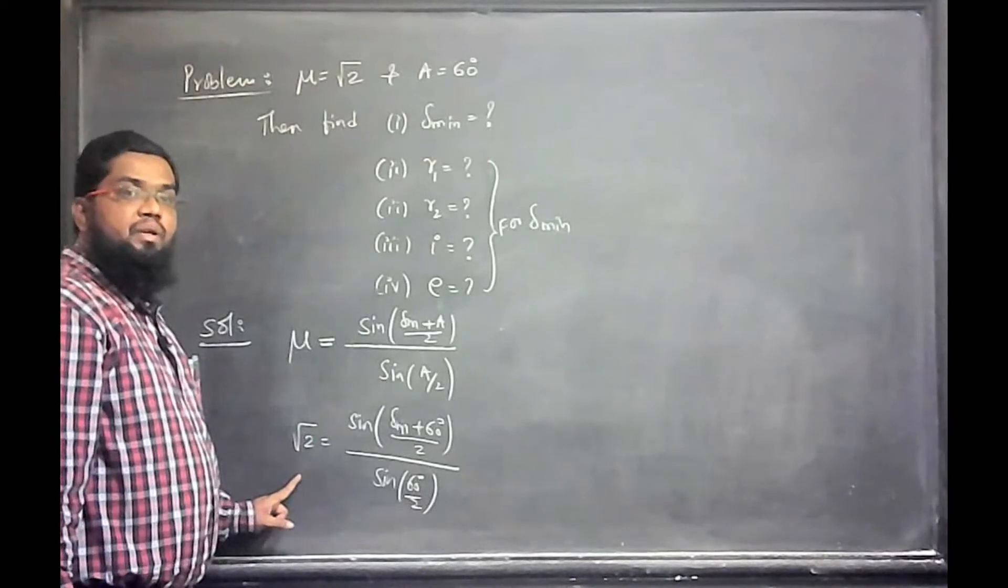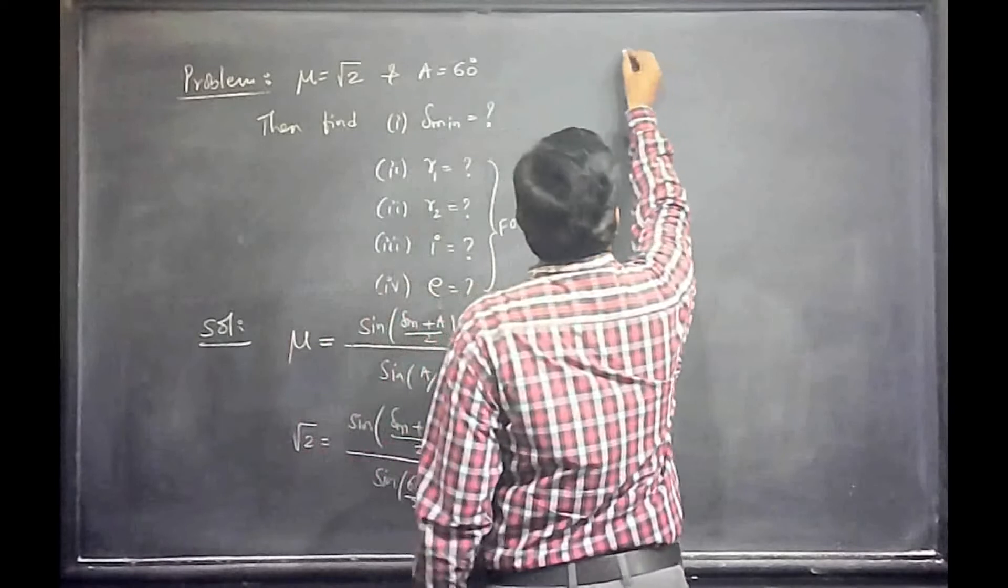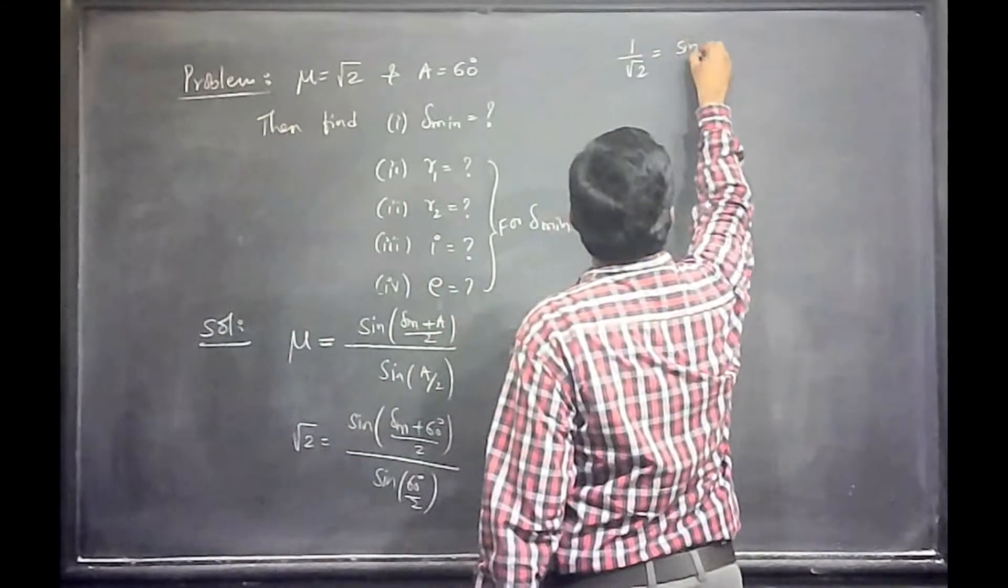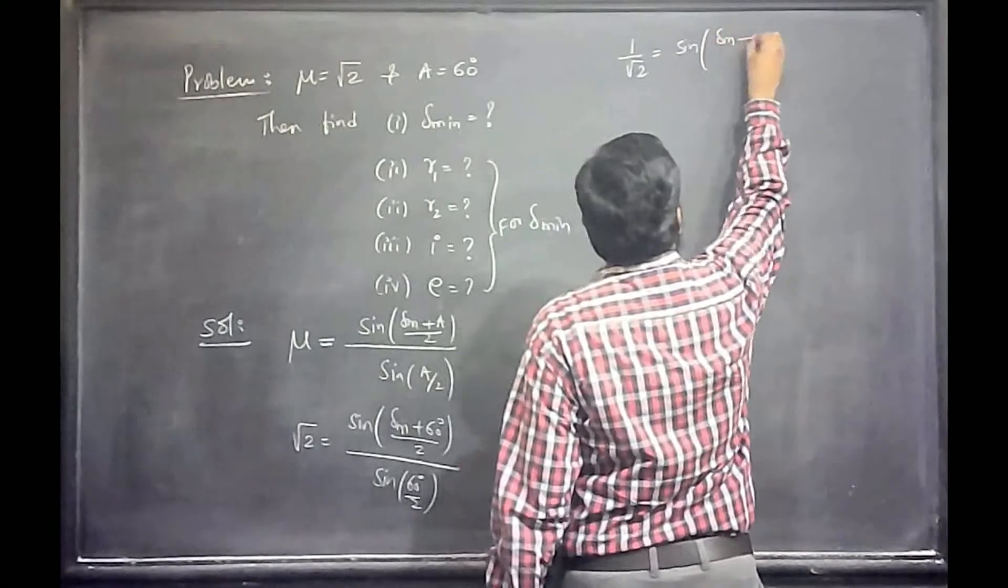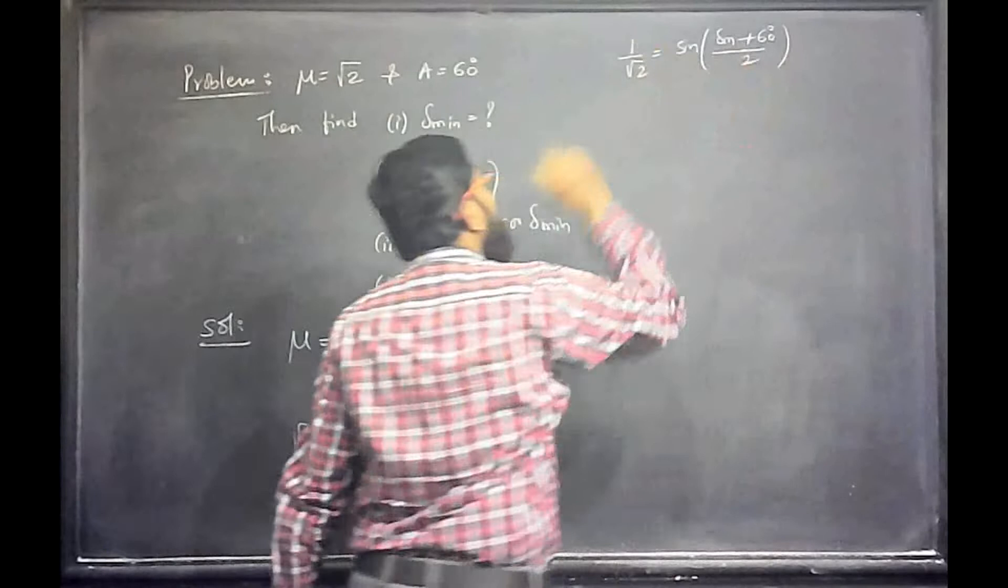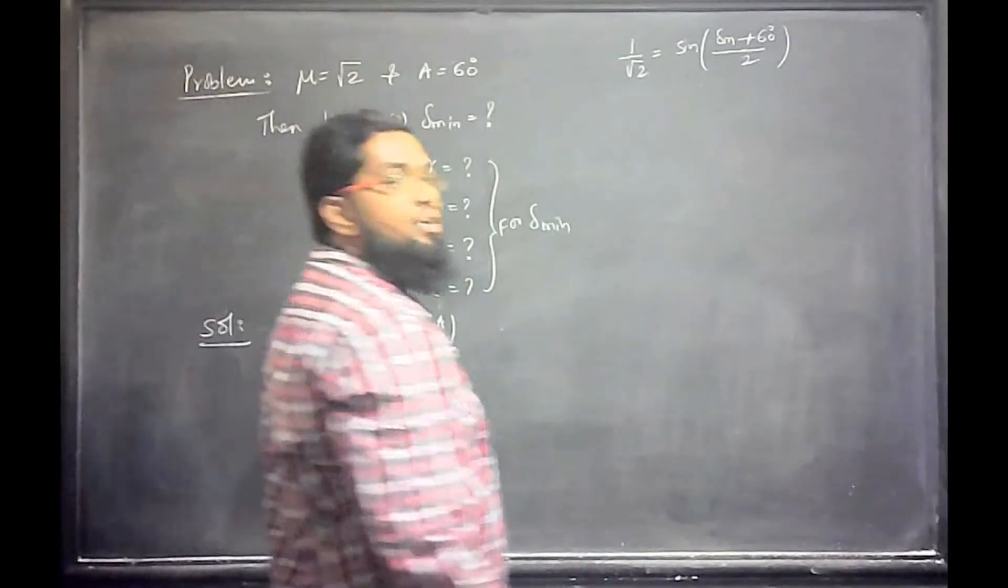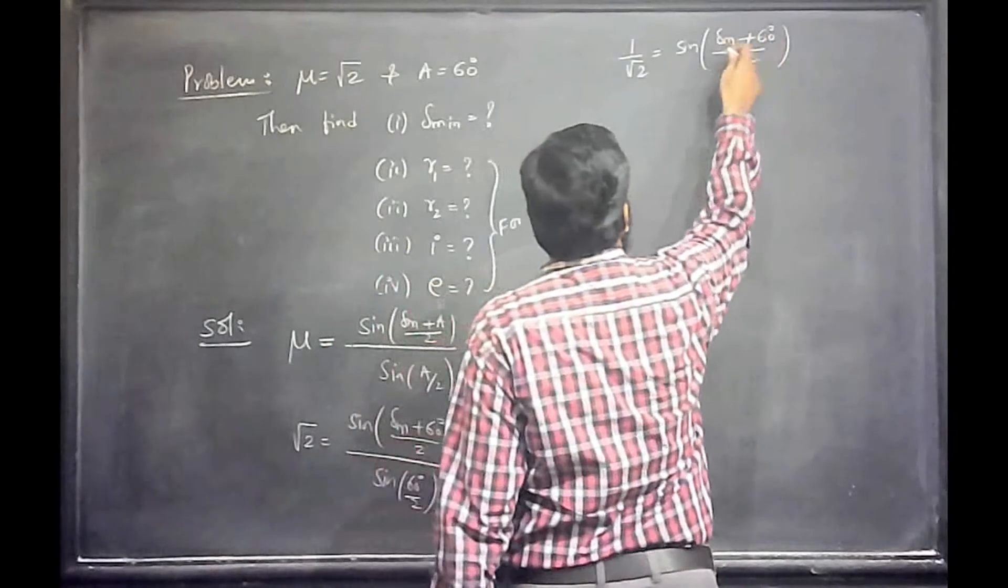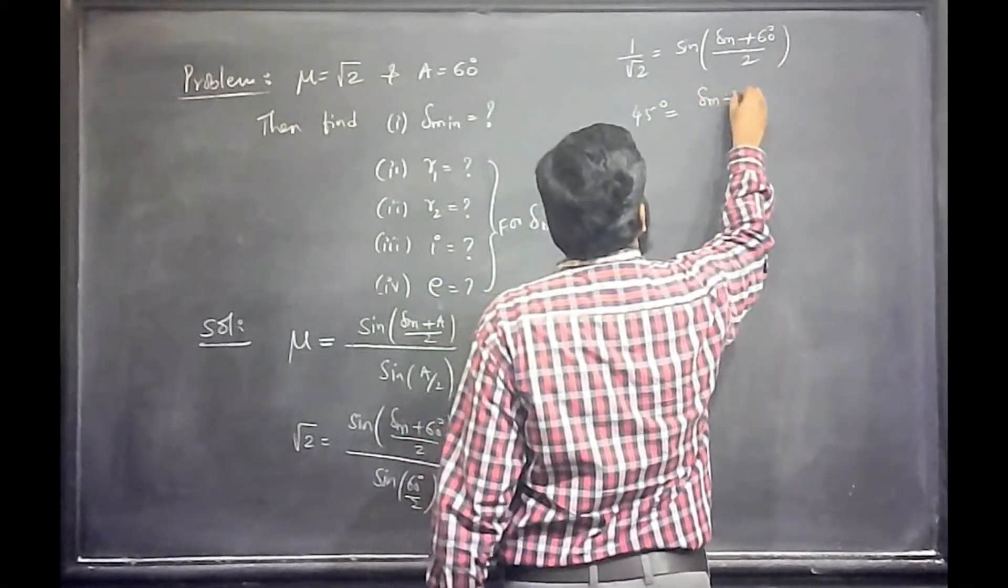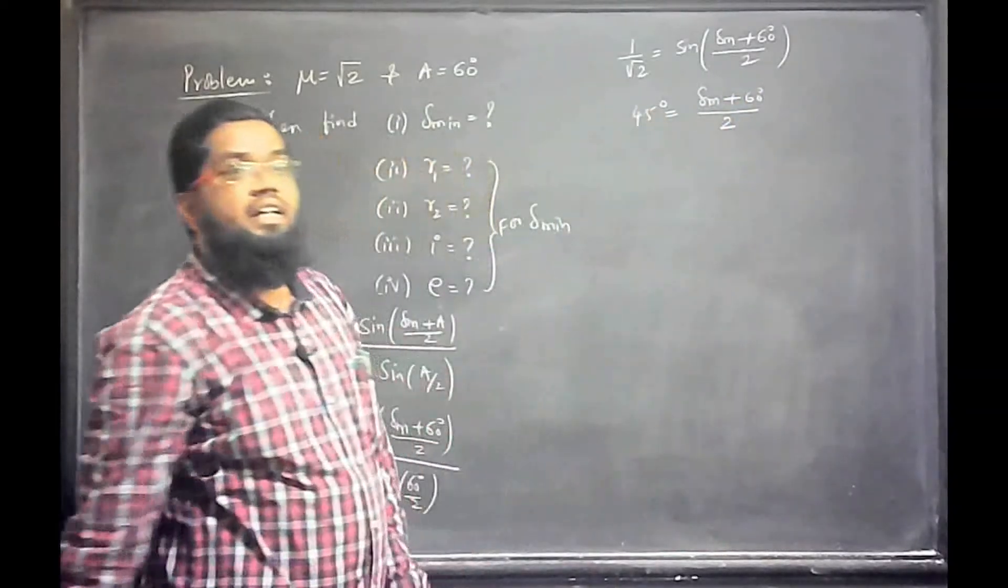√2 by 2 is 1 by √2. Finally 1 by √2 will be equal to sin of delta minimum deviation plus 60 degrees upon 2. 1 by √2 is 45 degrees. So 45 degrees equals minimum deviation plus 60 degrees divided by 2. This is 90 degrees.